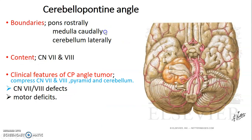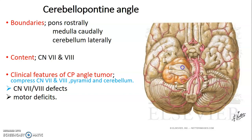The cerebellar pontine angle is the angle between the cerebellum and the pons. Its boundaries are: rostrally the pons, caudally the medulla, and laterally the cerebellum. This region — the cerebellar pontine (CP) angle — contains cranial nerve seven and eight: the facial nerve and the vestibulocochlear nerve. When you have a tumor in the CP angle, the facial and vestibulocochlear nerves are affected, producing deficits of both.